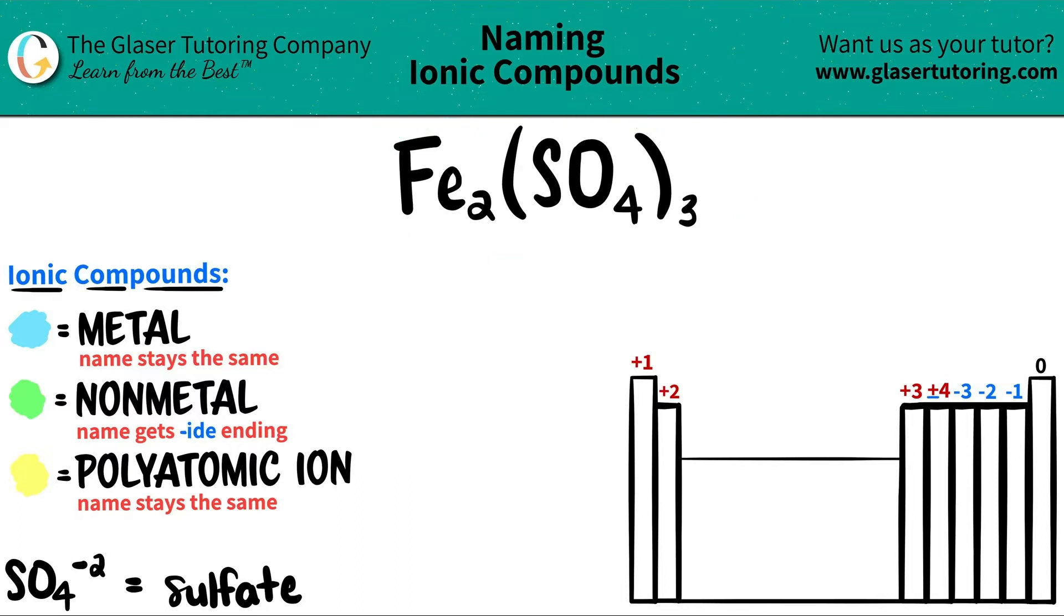Now, here's a little trick. If you have a compound that has three or more different elements, in this case we have three different elements. We have iron (Fe), sulfur (S), and oxygen (O).